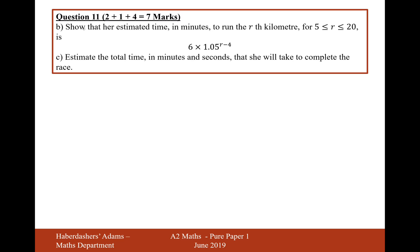Moving on to part B. Part B asks to show that her estimated time in minutes to run the rth kilometer, for 5 ≤ r ≤ 20, is 6 × 1.05^(r-4). So it's a bit difficult to explain this.